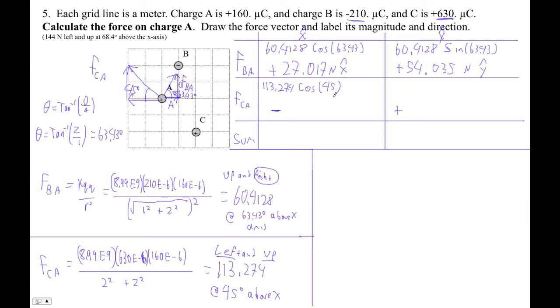So let's find that. 113 times cos 45. And, of course, the sine of 45 is exactly the same thing. So this component is negative 80.097, roughly, newtons in the x direction.